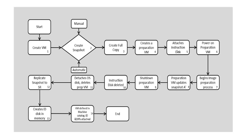The instruction disk provides instructions on how to build the VMs, then the preparation VM is powered on. Once powered on, the preparation VM starts the process to prepare the VMs and retrieves the complete VM updates from the snapshot created in the third step. Once done, the preparation VM will be shut down. The instruction disk, which was attached in step five, will then be deleted in step ten. After the instruction disk is deleted, the OS disk is detached and the preparation VM is deleted.